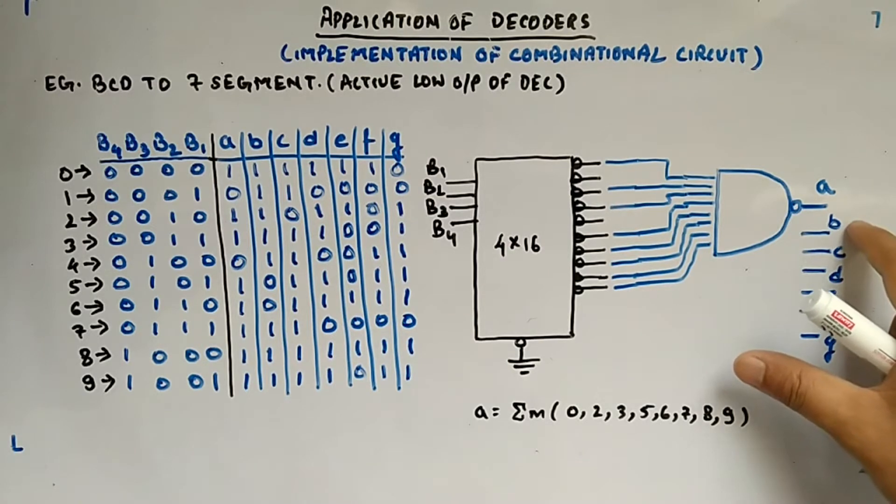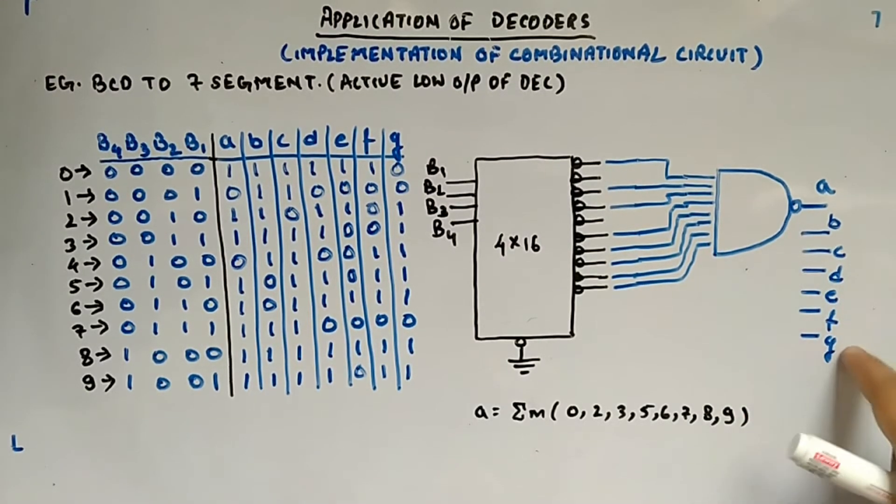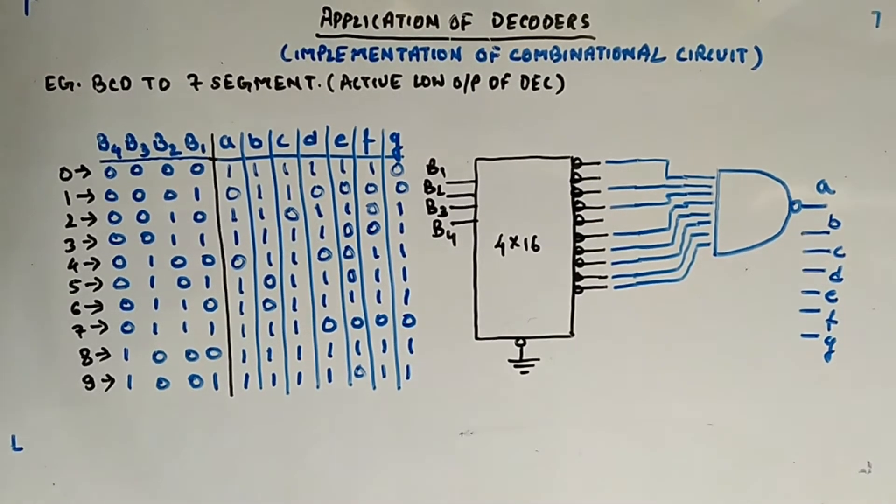Similarly you will do it for B, C, D, E, F, G. When all you will get, you will pass it to LEDs. So this is your ground, this value will be A and this will be like this, LED will glow.